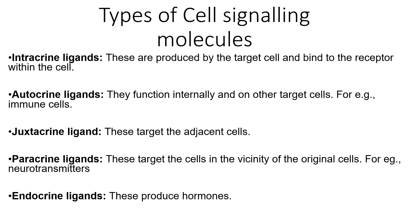There are five types of cell signaling molecules. We have intercrine ligands, autocrine ligands, juxtacrine ligands, paracrine ligands, and endocrine ligands. Intercrine ligands are produced by the target cell and bind to the receptor within the cell. Autocrine ligands function internally and on other target cells, for example immune cells. Juxtacrine ligands target adjacent cells — cells that are next to one another. Paracrine ligands target cells in the vicinity of the original cell, such as neurotransmitters. And endocrine ligands produce hormones.